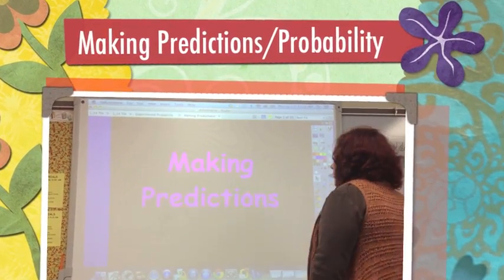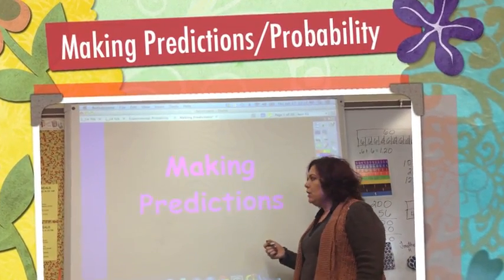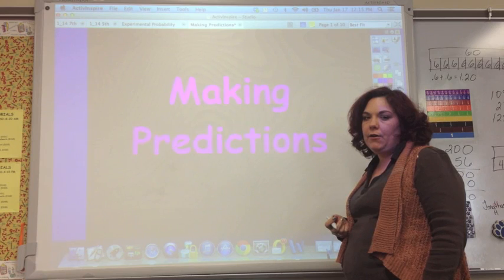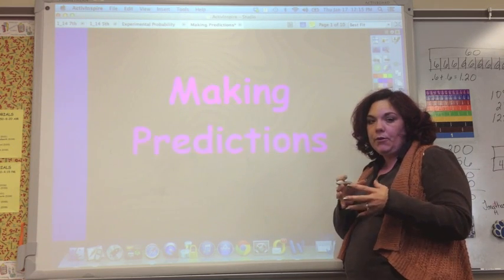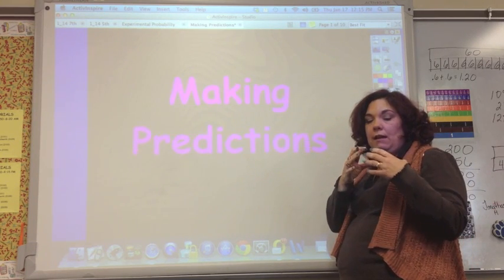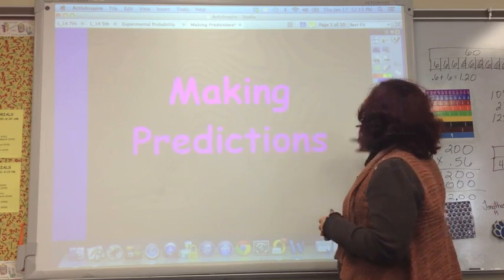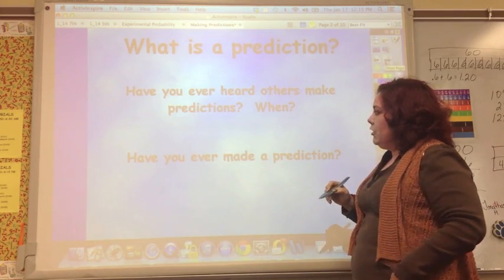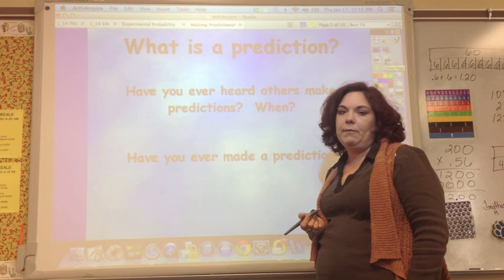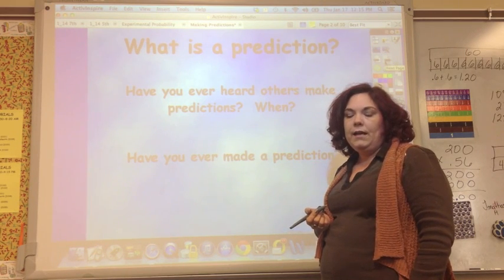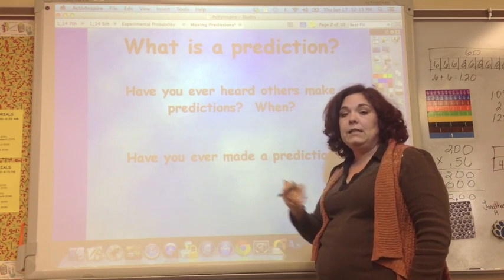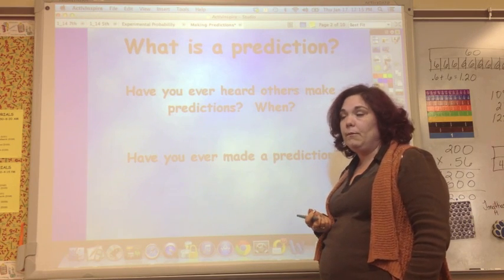This video is about using probability to make predictions. We talked about how you have a sample — what happens with a few — and then it's proportional to what will happen with many. Every day on the news they make predictions about whether it's going to rain, saying: based on the information we have, we think this is going to happen, and here is the probability that it will.